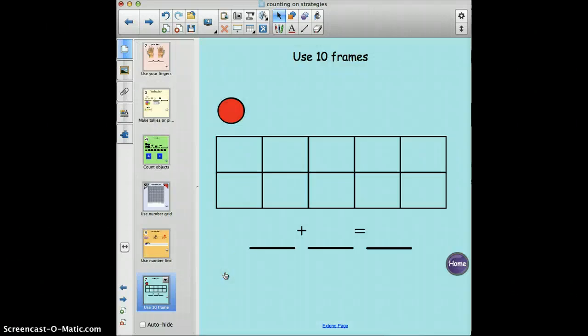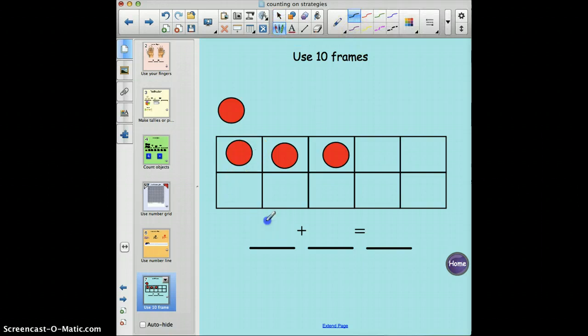And use the ten frames. In the ten frames you get to use these dots and make different number sentences for your partner. Maybe your problem is three plus what equals ten. So now they have to figure out how many spaces are left. They have the three dots plus one, two, three, four, five, six, seven, and they can fill in their answer seven. So they're using the skill of a missing addend.